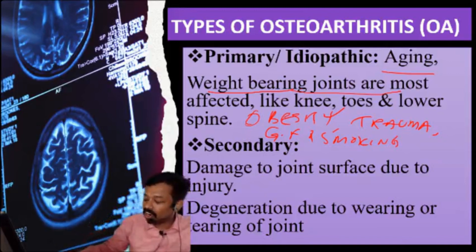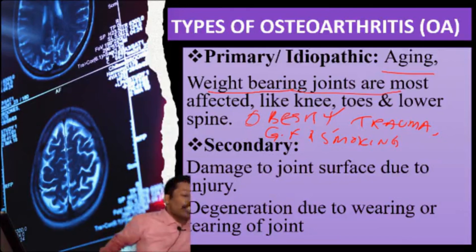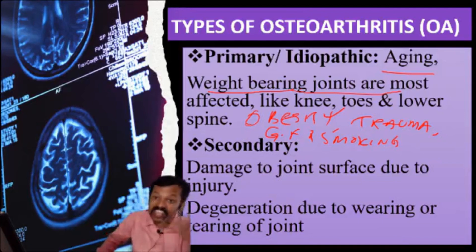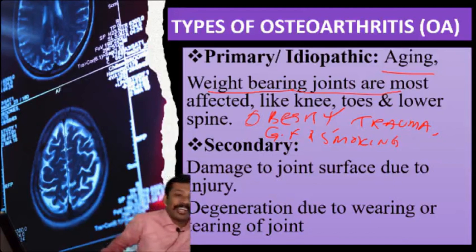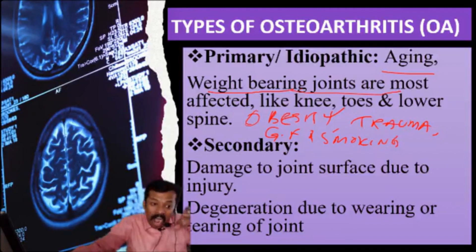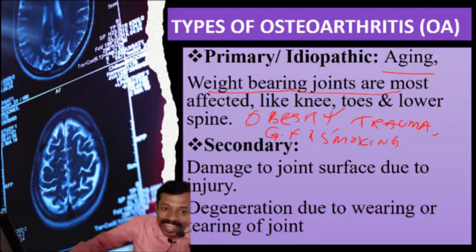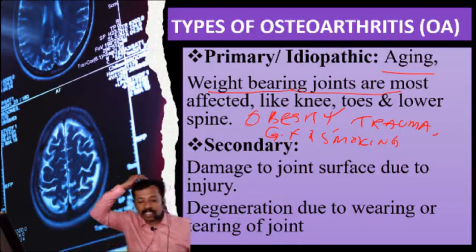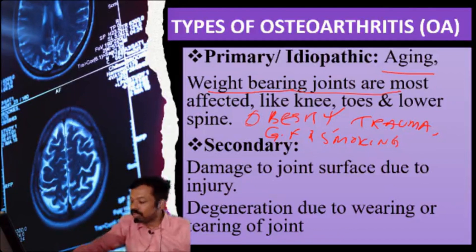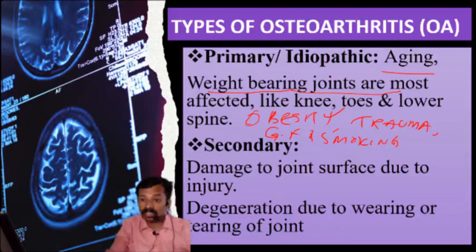Secondary osteoarthritis means we can relate it to a direct cause. There was a direct cause to the bone or joint — an injury, a trauma, or an infection, an inflammation at the joint area — and due to that, degeneration of the synovial joint or joint cartilage happened. There is a direct relation. Examples include direct injury, open injury, or fracture.